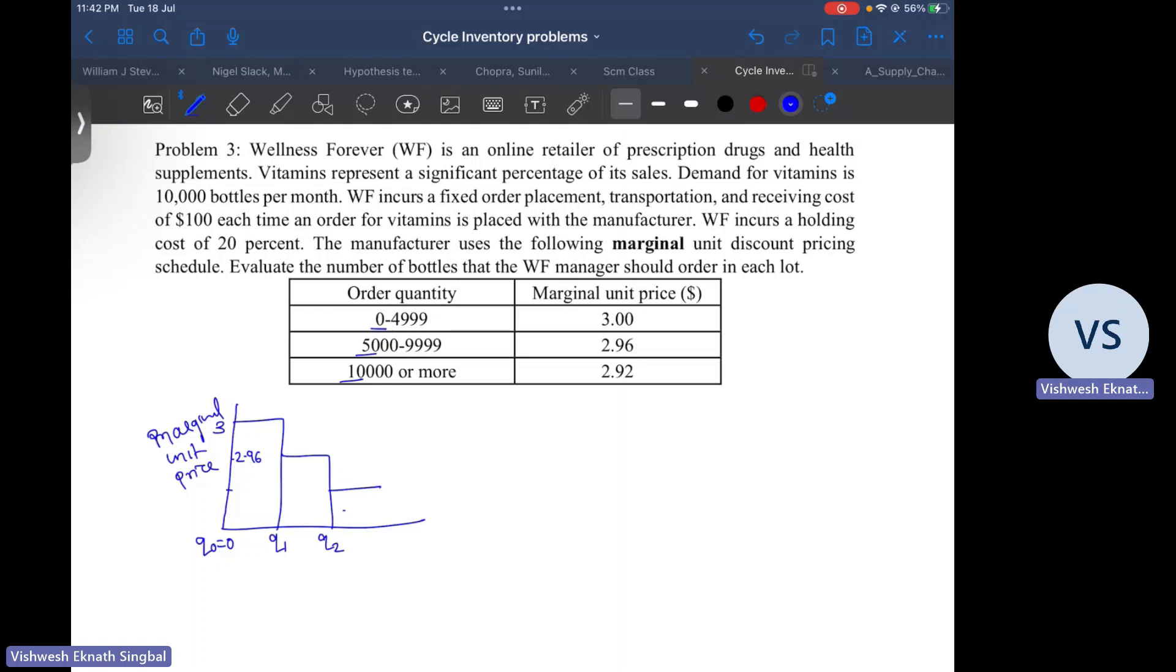And finally above q2 it will be 2.92. So what is the information that we have from the problem? We know q0 is 0, q1 is 5000, and q2 is 10,000. Corresponding unit prices are c0 equal to 3, c1 equal to 2.96, and c2 equal to 2.92.